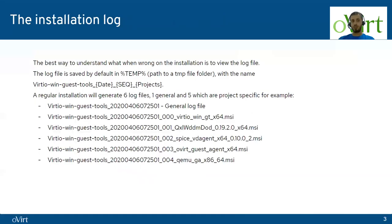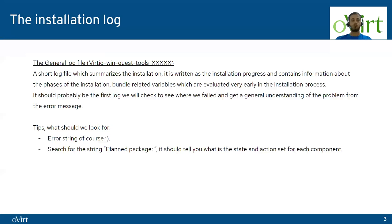The last thing I want to talk about is how to know what went wrong in the installation. As I said at the beginning, MSI provides us with a very rich log file. As you saw in the demo, once you go to the temp directory, you can view all the logs that have been generated. Our installer currently creates six logs for each MSI that it installs and one general log file. You can look at each of them and see where the installation failed. The general log file contains a summary of the installation — it will tell you where the installation failed, and from it you can go to any of the sub log files to find out exactly what went wrong.